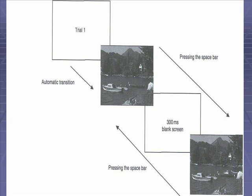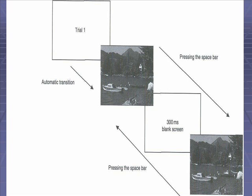This is a pictorial representation of what was just explained. After the experimental process, participants were scored. There were four possible responses: if they pressed enter by accident, it was a mistake response; if they incorrectly guessed, it was a wrong response; if they gave up and moved on, it was a pass response. All of these were considered wrong answers. If they got it correct, that was a correct response.